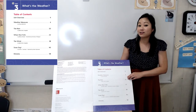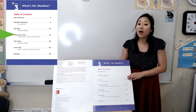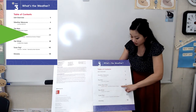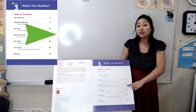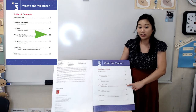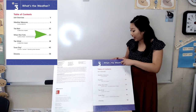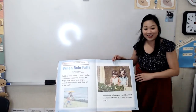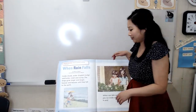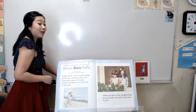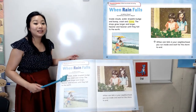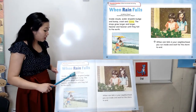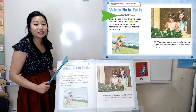Our story today is called When Rain Falls. And when I move my finger across the page, I see that it's on page 22. So I'm going to go ahead and turn to page 22 — and there it is. When Rain Falls — and this is the title, the author, and the illustrator.